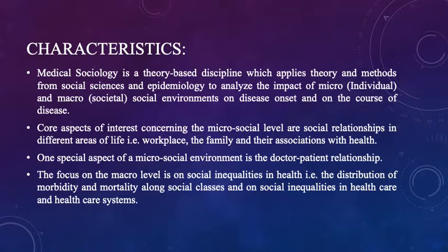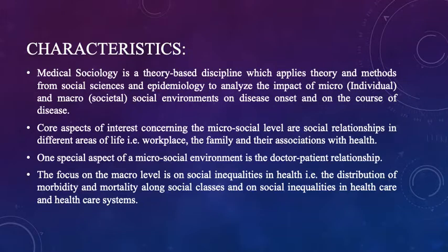The focus on the macro level is on social inequalities in health — that is, the distribution of morbidity and mortality along social classes — and on social inequalities in health care systems. Morbidity refers to the rate of occurrence of disease in a particular population, while mortality refers to death among a particular population. The focus here is on how rates of disease and death are distributed across social classes and how social inequalities play a very important role in the healthcare sector.